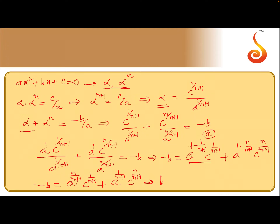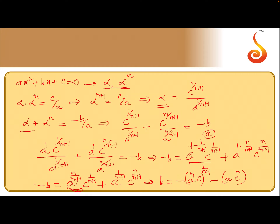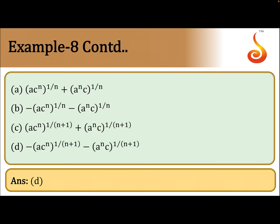Taking the whole expression to the power of 1/(n+1) as a common factor, b can be written as −[a^n · c^(1/(n+1)) − a · c^n]^(1/(n+1)). So b = −(a^n · c^(1/(n+1)) − a · c^(n/(n+1))), which corresponds to option D.